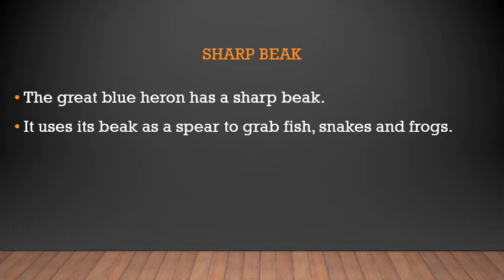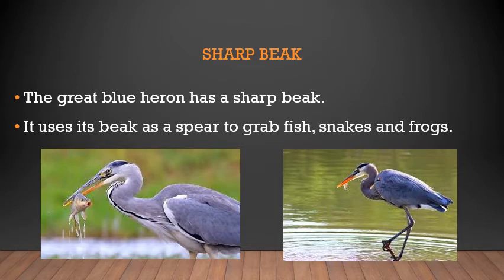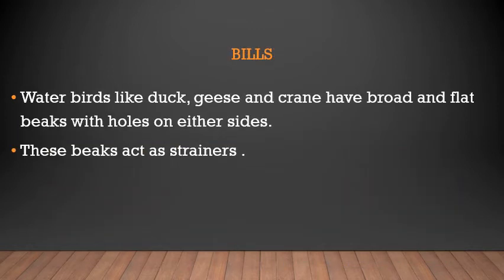Next is the sharp beak. The great blue heron has a sharp beak which it uses like a spear to grab fish, snakes, and frogs. Its beak is strong and helps it catch prey in the water, including fish, snakes, and frogs.